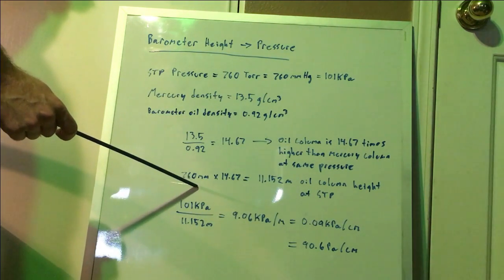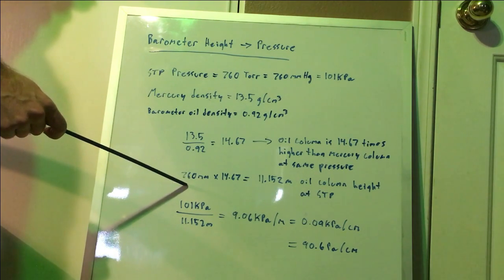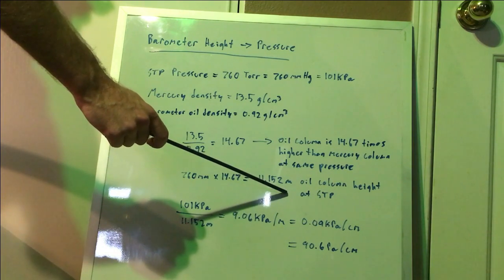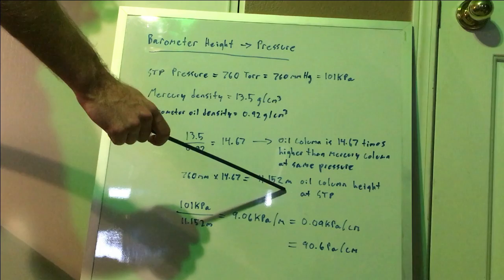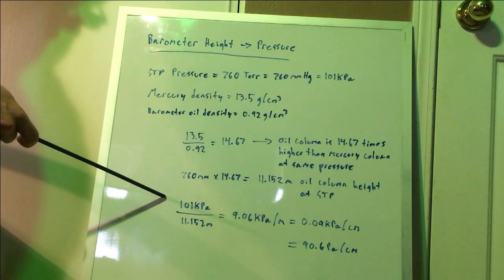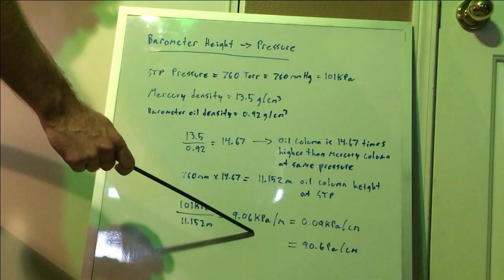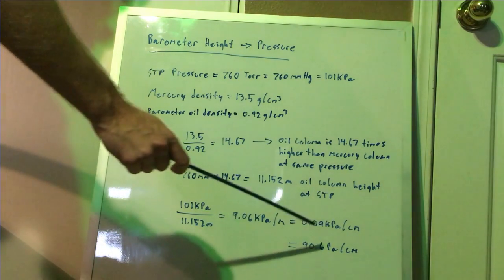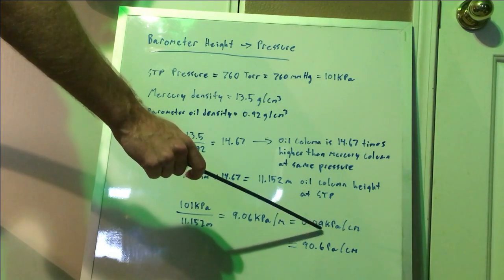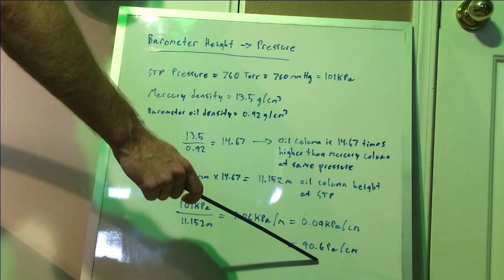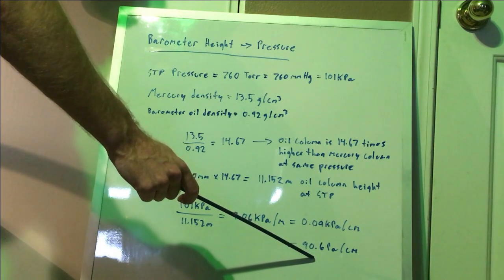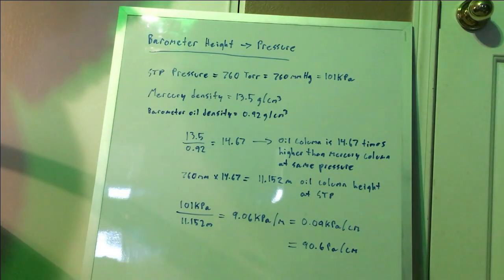Now that leads us to the conclusion that the oil column will be 14.67 times taller than a mercury column at the same pressure because of that difference in density. Then from there we can just multiply by the height of the mercury column at STP, 760 millimeters of mercury here, we get 11.15 meters of oil at STP. Now if we just take the STP value of pressure in kilopascals, divide that by the height of our oil column at STP, we get this value of 9 kilopascals per meter of oil height, which is 0.09 kilopascals per centimeter of oil height. And finally, the value that I'm using, 90.6 Pascals per centimeter of oil height.